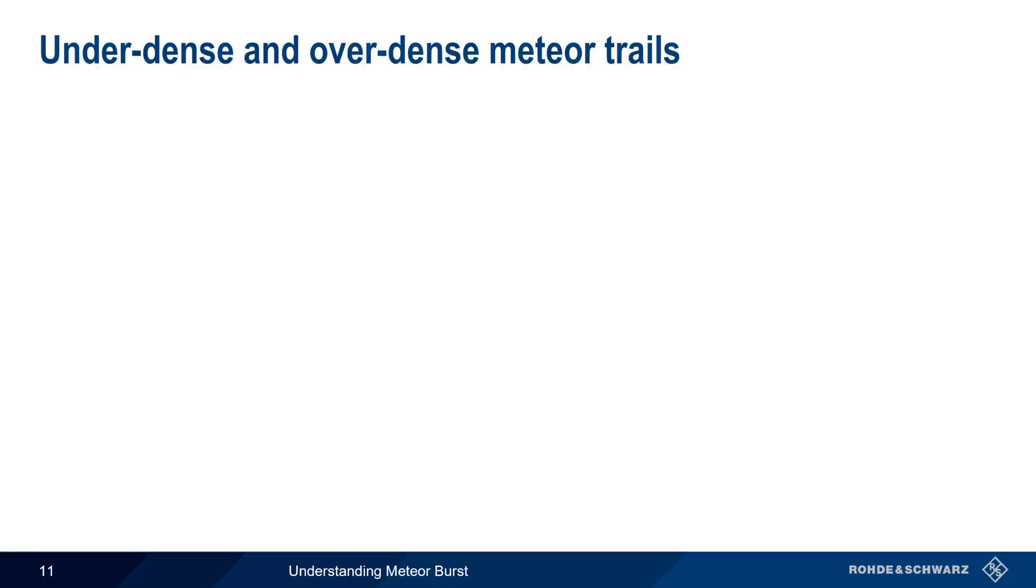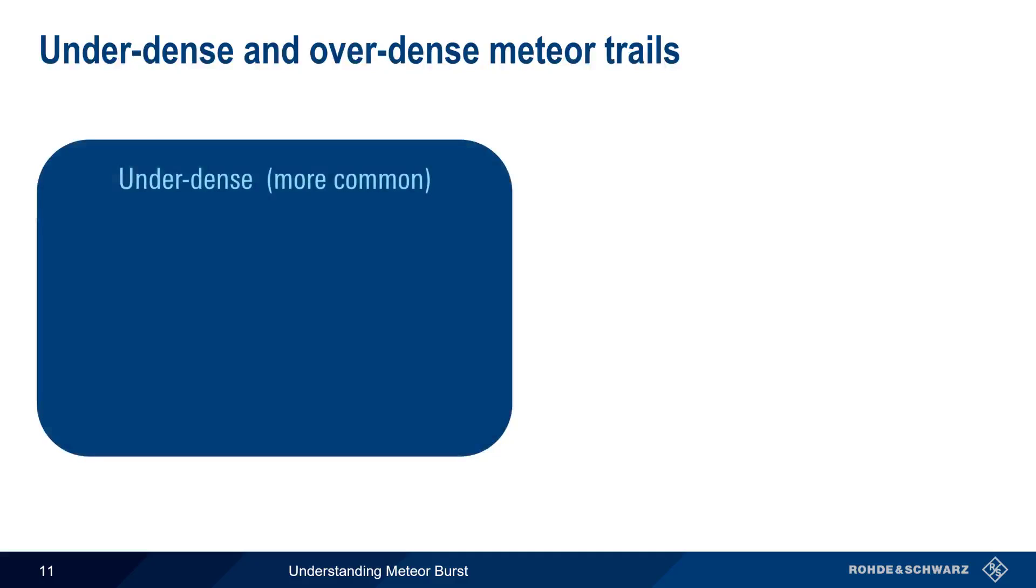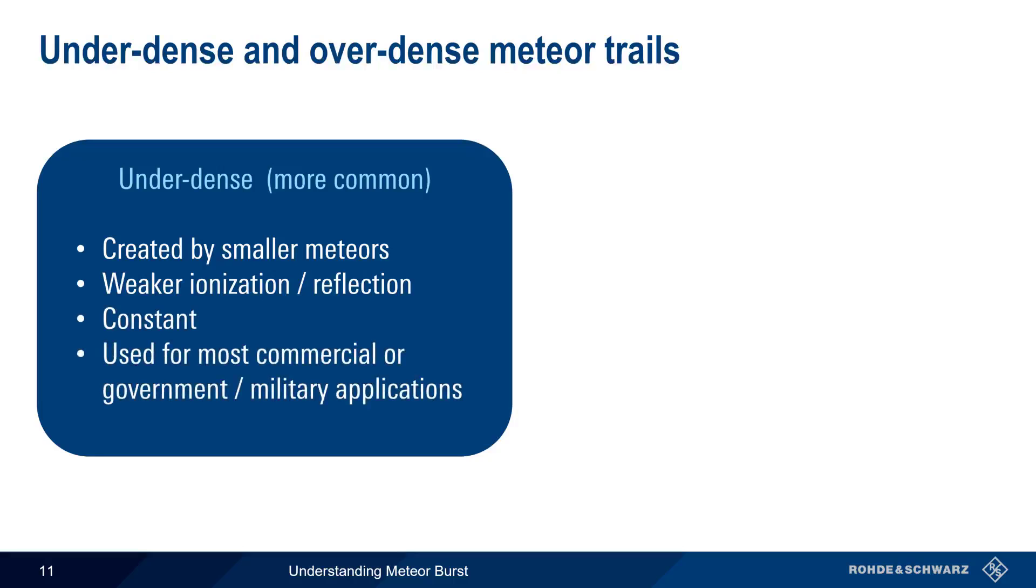Meteor trails can be classified as over-dense and under-dense based on their levels of ionization. Under-dense meteor trails are created by smaller meteors, usually those entering the atmosphere as sporadic meteors. The trails of these meteors have weaker ionization and reflection of VHF signals, but they are also more constant and predictable, and therefore most commercial and or government military applications, such as the SNOTEL example we looked at earlier, rely on these under-dense trails.